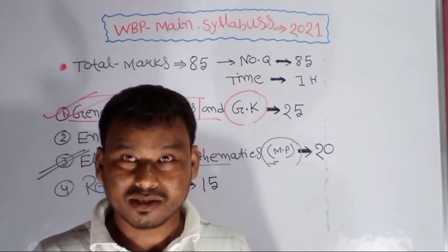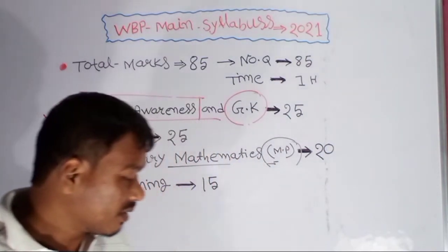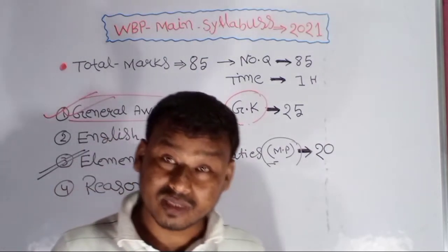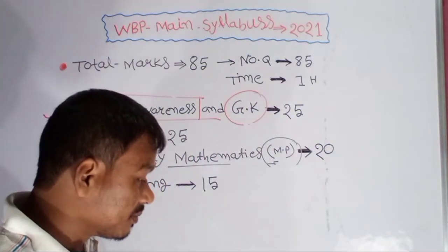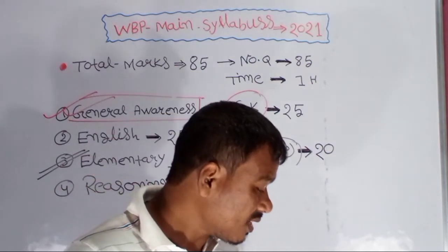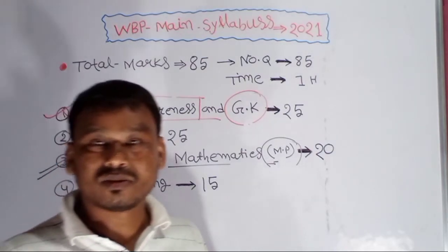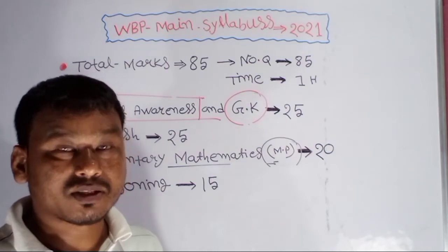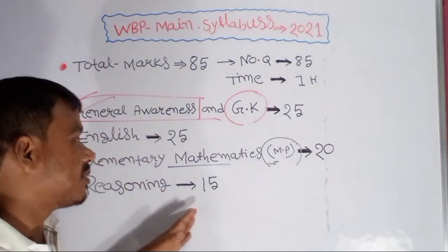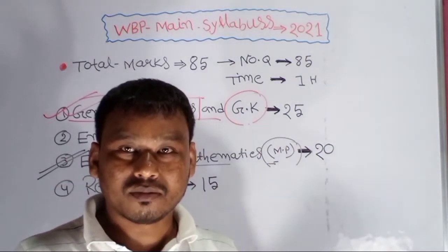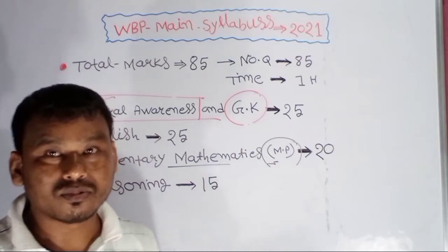We're going to try to get blood relations — that's very important. There is syllogism, mathematical operations, Venn diagrams, coding and decoding, alphabet series, and number series. The most important thing is that syllogism is very active and very important. If you choose this specific information, you can find it first.